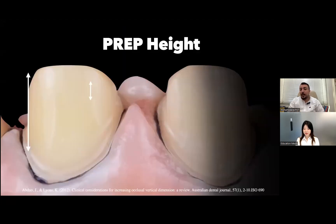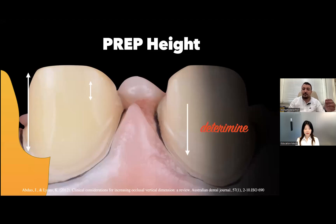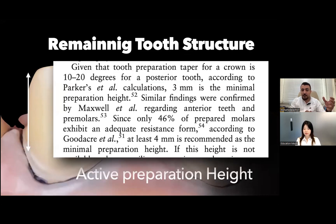It's the abutment height, it's the prep height. We have a definition which is called active preparation height. This height is the distance between the finish line to the occlusal surface. This height should be from 3 to 4 millimeter given that we have an ideal degree of taper.